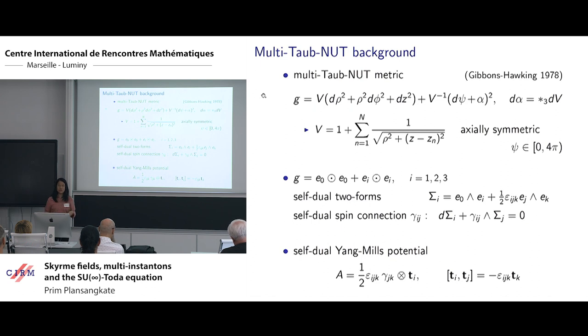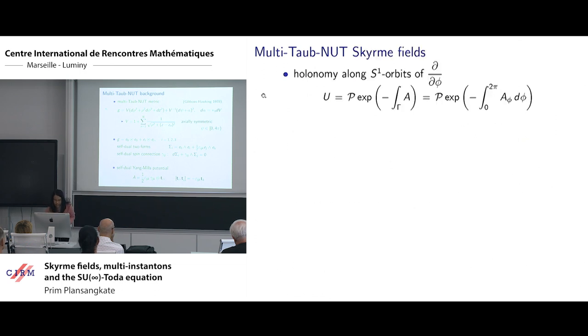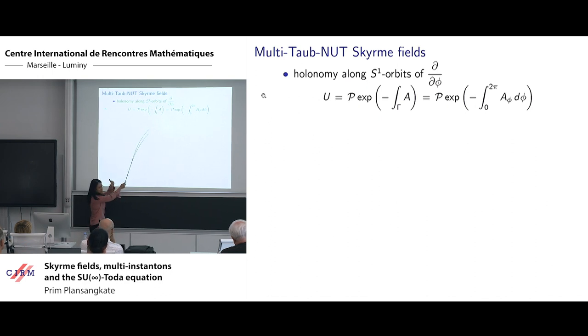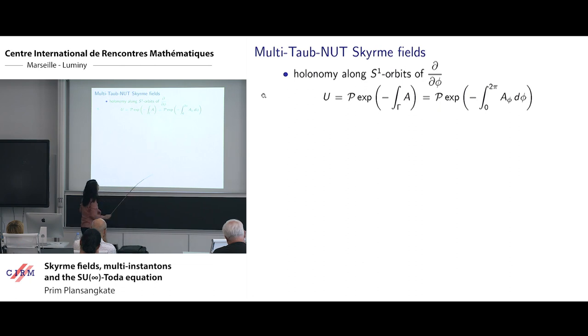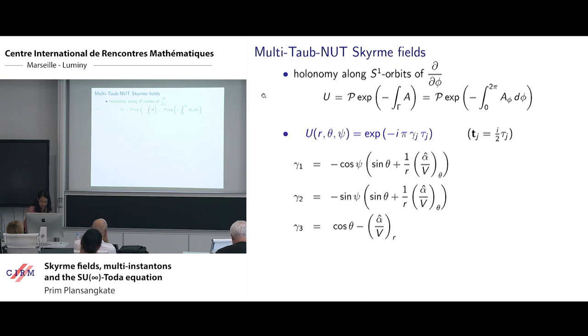Now with this Yang-Mills potential, we now take the holonomy. Because our metric has axial symmetry, we take the holonomy along the S1 orbit of this axial symmetry d by d phi. So the holonomy is given by this expression here. This is what we got, the expressions that we got.